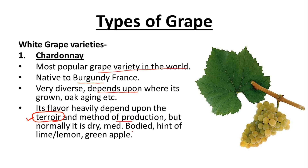Whether it is oak-aged or not, if aged it will have more creamy and buttery notes. Normally Chardonnay is dry — meaning it does not have any residual sugar — and medium-bodied. Body refers to the viscosity or thickness of the beverage. It has hints of lime, lemon, and green apple, which are the prominent flavors of Chardonnay.